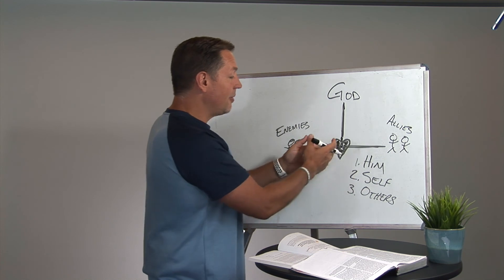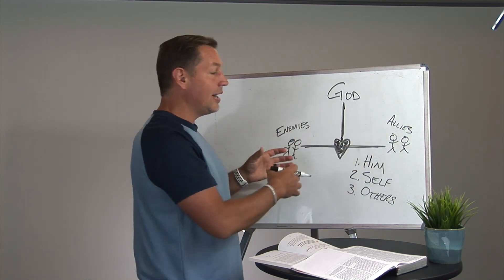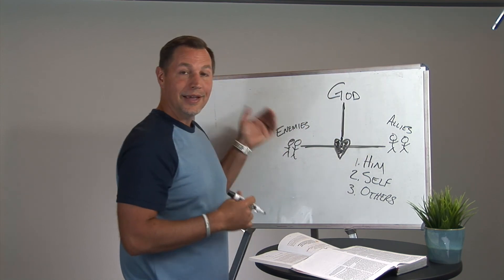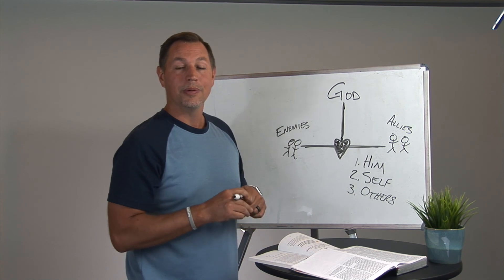So then the third part becomes the horizontal love. And the horizontal love is going out and loving both your allies and your enemies and doing that well in a biblical way.